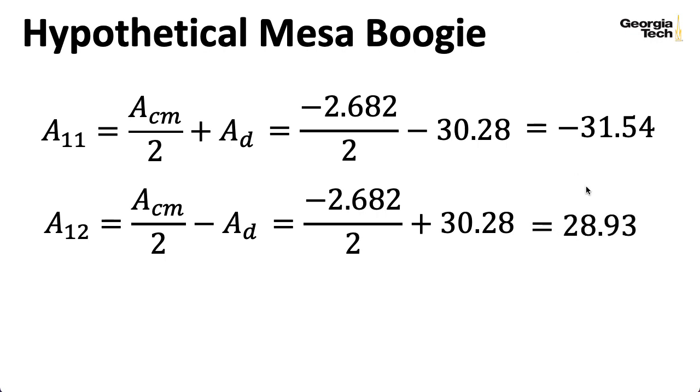So if I plug in the numbers I computed for the common mode and differential mode gains for our hypothetical mess-a-boogie, I wind up with a gain on the left of minus 31.54 and a gain on the right output of 28.93. So you'll see that these are both close to 30, which is what we computed for the case of the actual mess-a-boogie with the differing load resistors, but they are different.